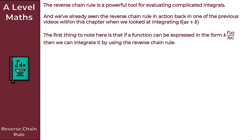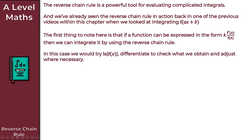The first thing to note is that if a function can be expressed in the form k times f prime of x over f of x, then we can integrate using the reverse chain rule. In this case we would try ln of our denominator, so ln of f of x. We'd differentiate to check what we obtain and adjust where necessary.